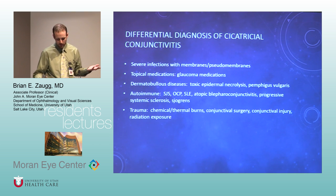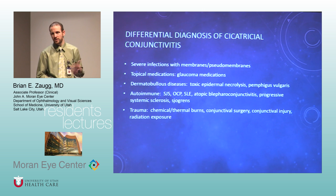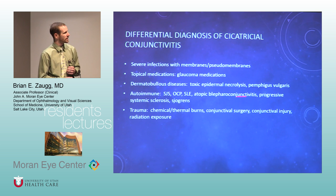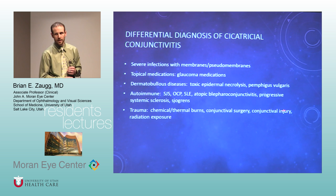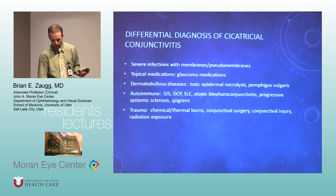Other things to think about with cicatricial conjunctivitis: glaucoma medications, bad infections causing membranes and pseudomembranes (EKC can do this), bad burns, autoimmune diseases, and trauma. We can do this to patients — conjunctival surgery, recurrent pterygia that scar up to the eyelids. Radiation is another common cause.